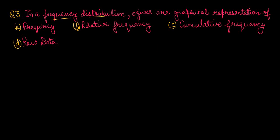Question number 3: In a frequency distribution, ogives are the graphical representation of cumulative frequency. Option number C is the right one.